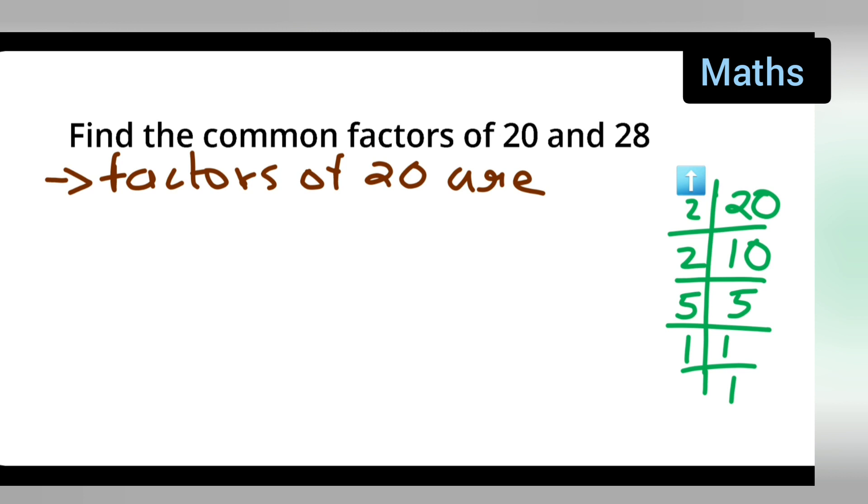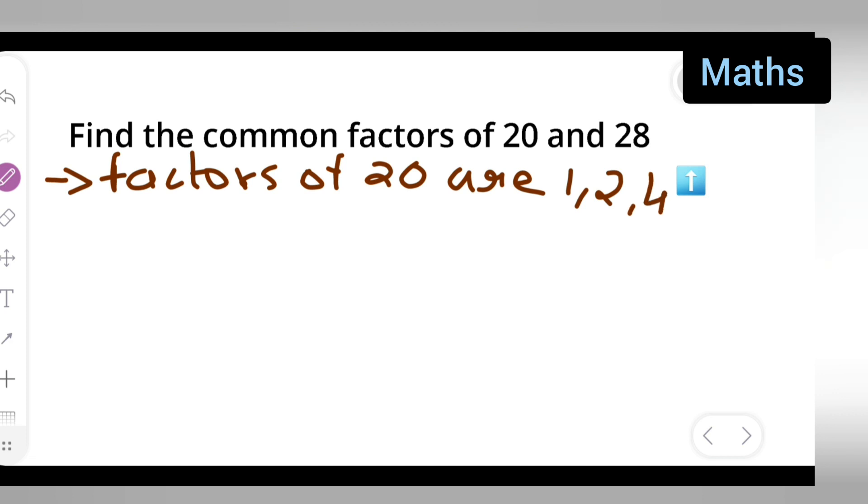The factors can be 2 twos are 4. Factors of 20 are like 1 comma 2 comma 4 comma 5. Because 4 fives are 20, right? Then 10 comma 20.